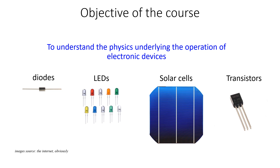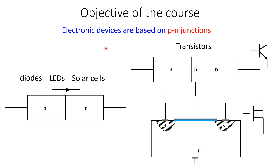As implied by the name, our main objective is to understand the physics underlying the operation of electronic devices. There are many examples of electronic devices like diodes, LEDs, solar cells, and transistors. The beauty of electronic devices is that they are based on the same kind of element, which is called a PN junction.